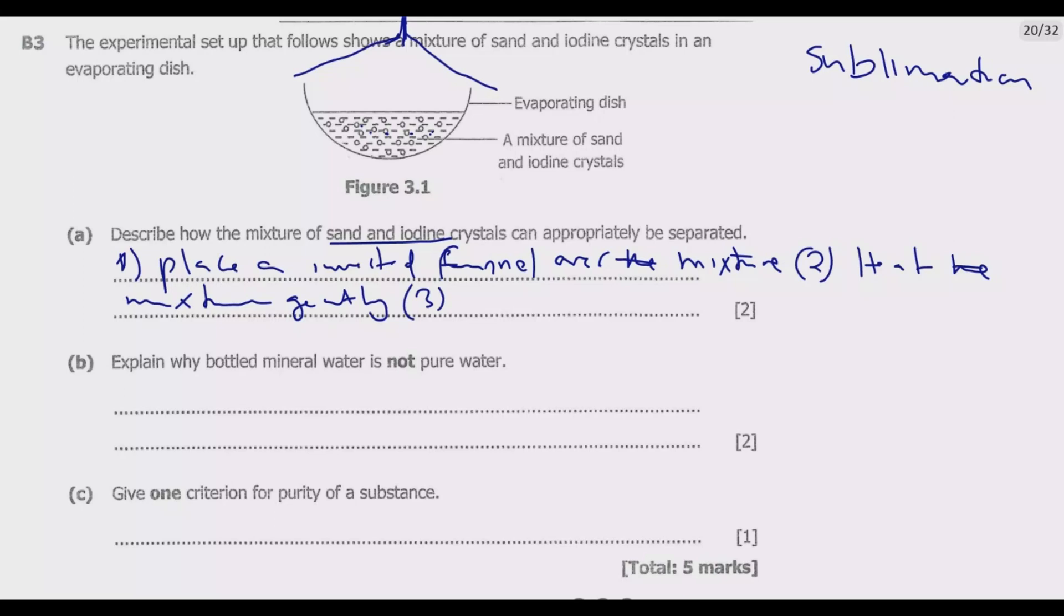As the iodine gas is rising, the inverted funnel will help it to be trapped, so it will go up the funnel.